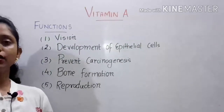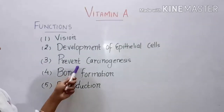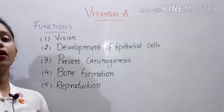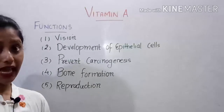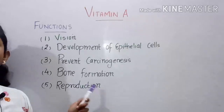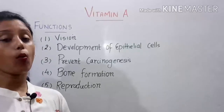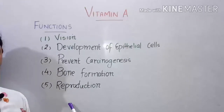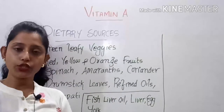Second is development of epithelial cells — an adequate amount of Vitamin A is required for proper epithelial cell development. Third, it prevents carcinogenesis — Vitamin A can, to some extent, prevent cancer cell formation. It also helps in proper bone formation and in reproduction.